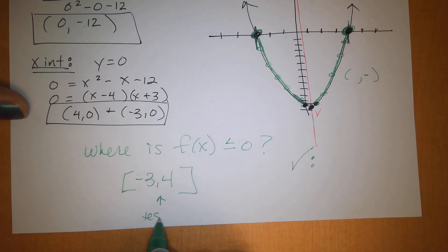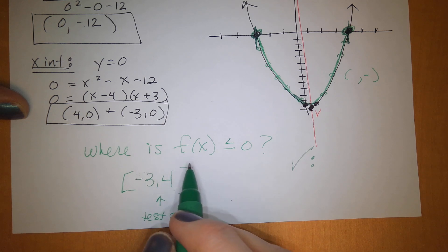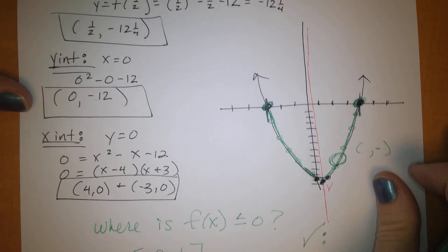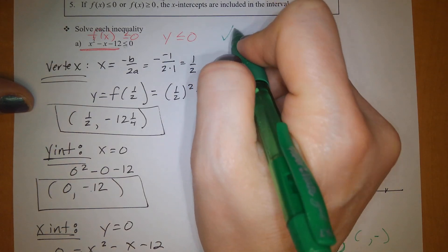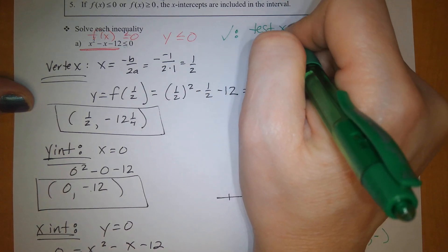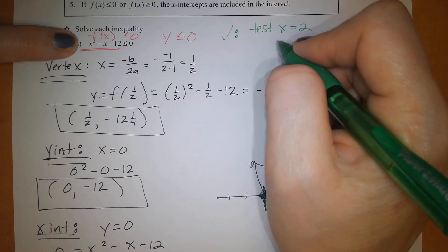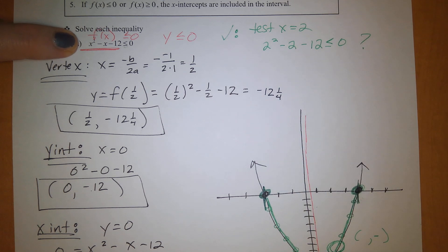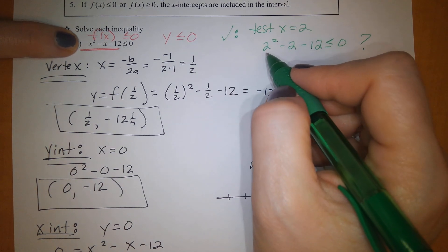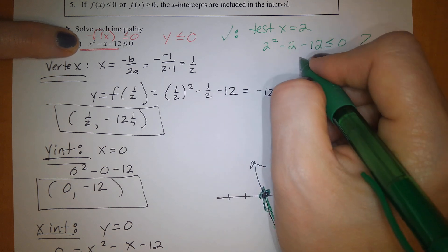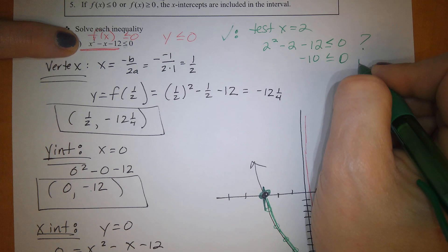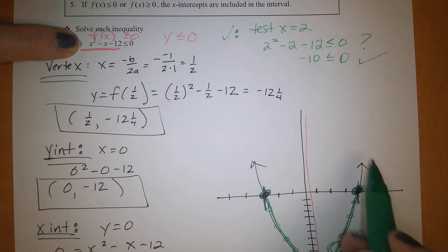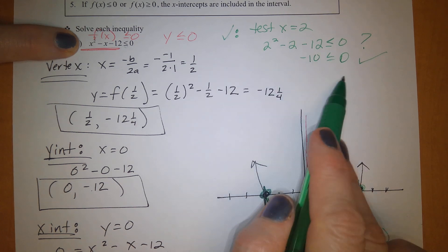Let's test x = 2, since it's inside the shaded area. Plugging into the original: 2 squared minus 2 minus 12. Is that less than or equal to 0? Well, 4 minus 2 is 2, minus 12 is negative 10, and yes, that is less than 0. So any point you pick between negative 3 and 4 will give a true answer.